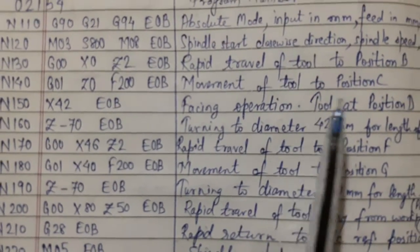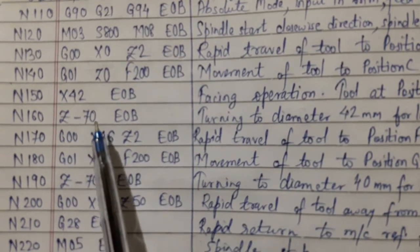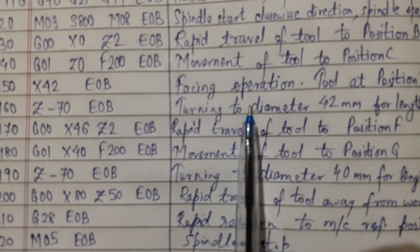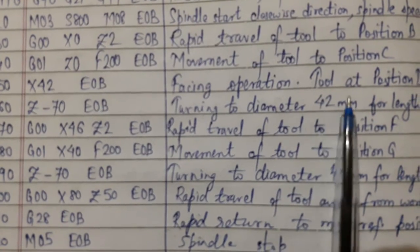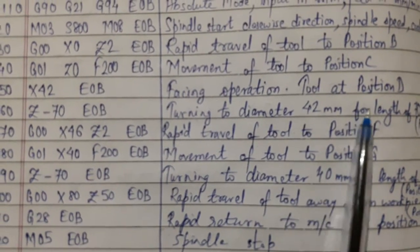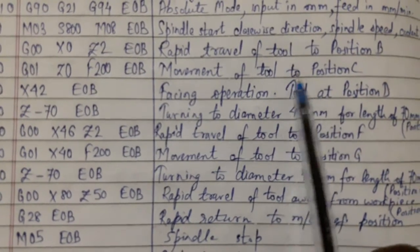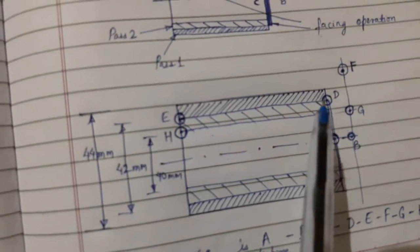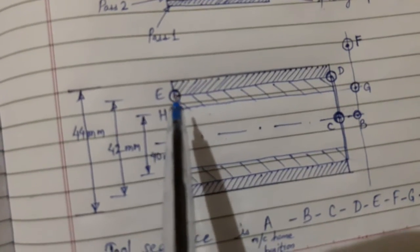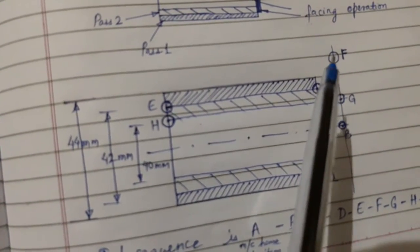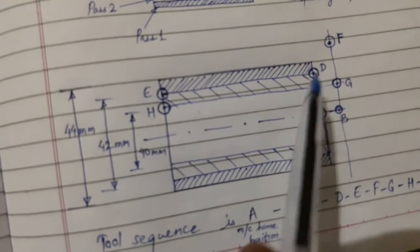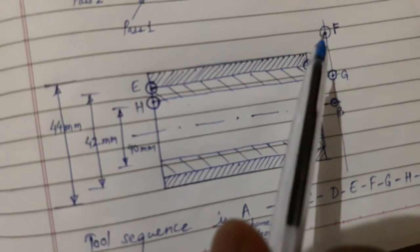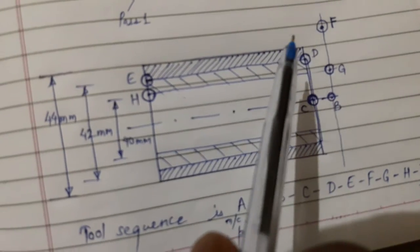With facing done, we now perform the first pass turning operation. The tool moves towards the left with Z equal to minus 70, so turning takes place and the diameter becomes 42 mm over a length of 70 mm. The tool is now at position E. It then goes rapidly to position F — X46, Z2 — which is 2 mm away from the face and clear of the 44 mm original diameter.